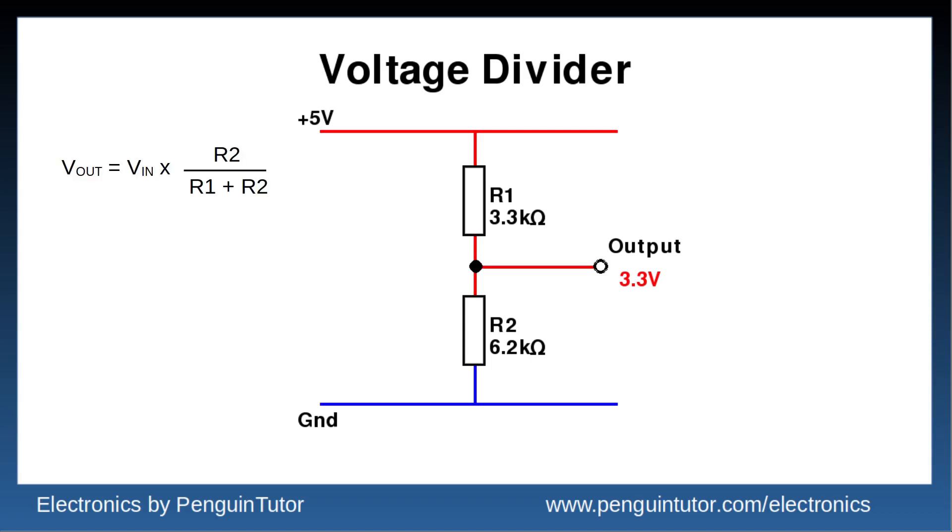And this is the formula which shows the relationship. The output voltage is the input voltage multiplied by R2 divided by R1 plus R2.